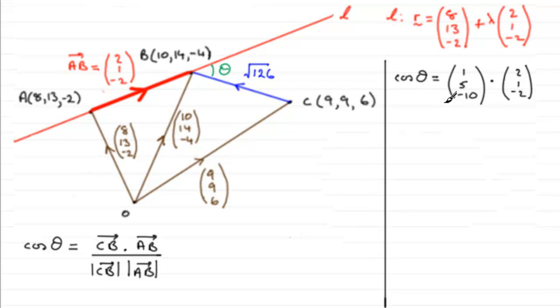And then we divide this by the magnitude of our vectors, C to B. C to B was the last question, the magnitude of it. We found that it was the square root of 126.